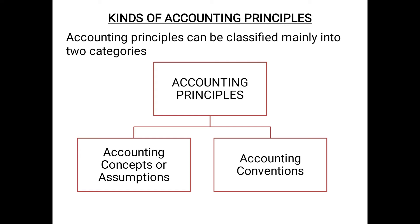There are two kinds of accounting principles. Accounting principles can be classified mainly into two categories: accounting concepts or assumptions, and accounting conventions. Accounting concepts or assumptions are generally followed universally by each and every accountant as a matter of compulsion. But accounting conventions are a little bit flexible — it depends upon the organization to either follow, edit, or adapt them according to its needs.